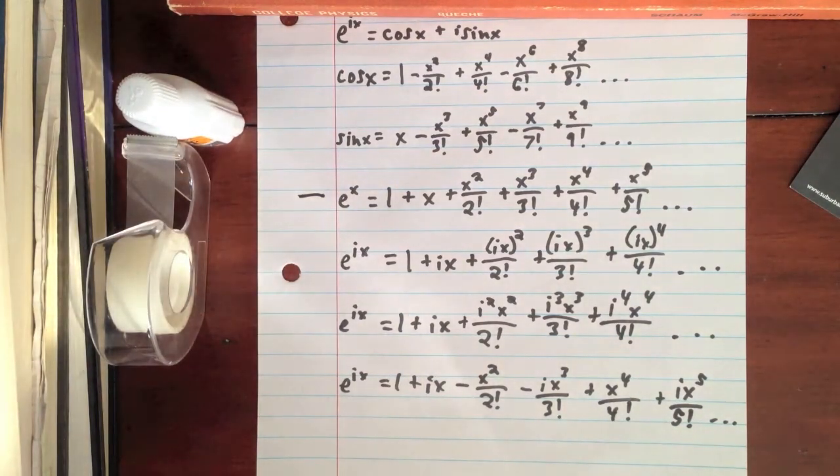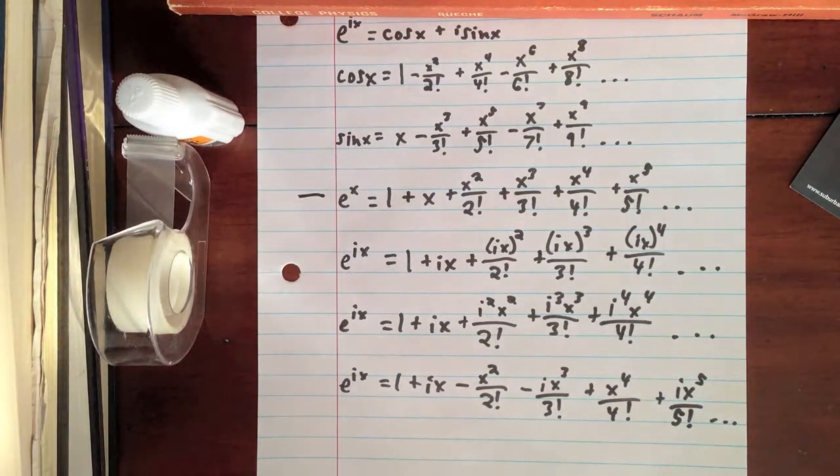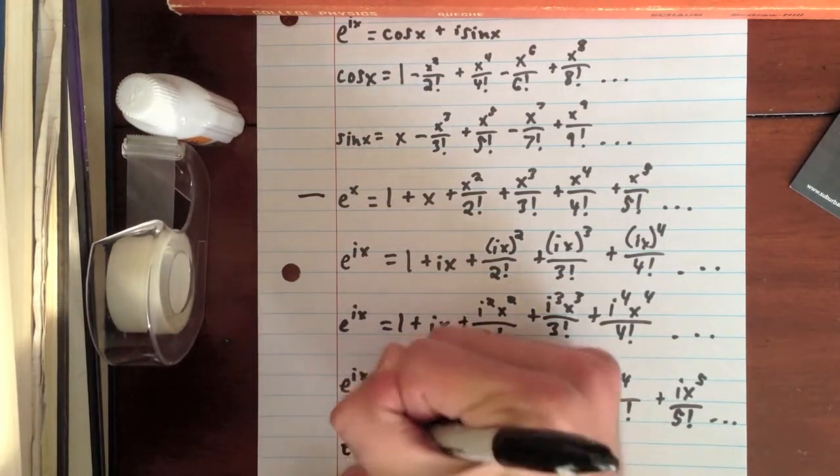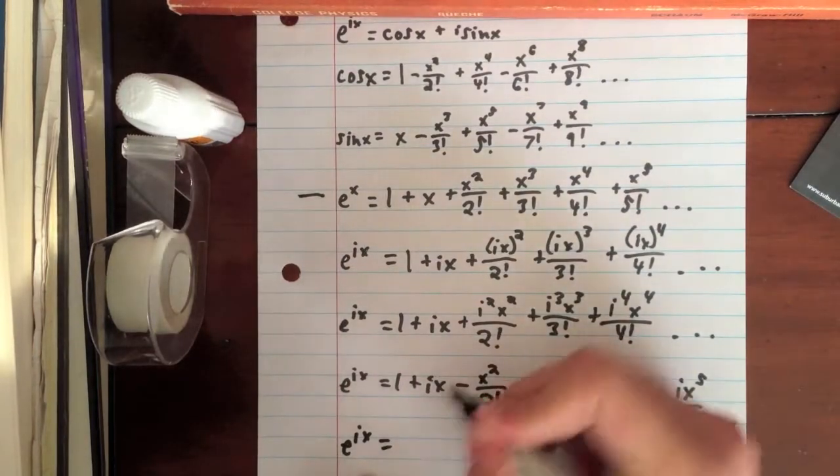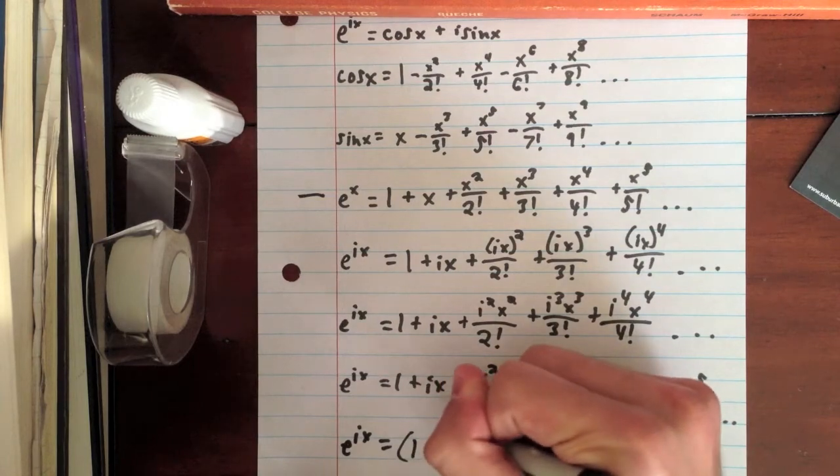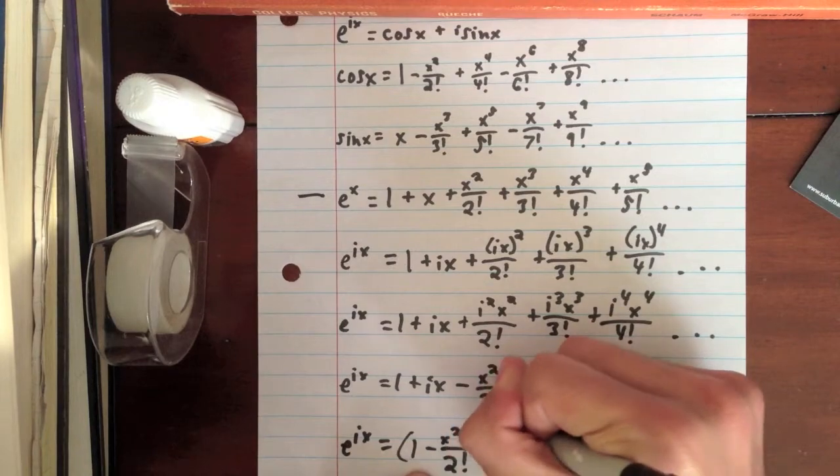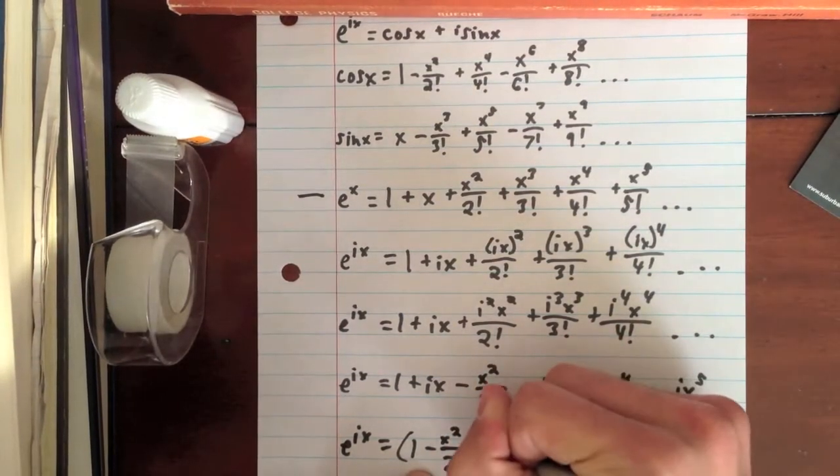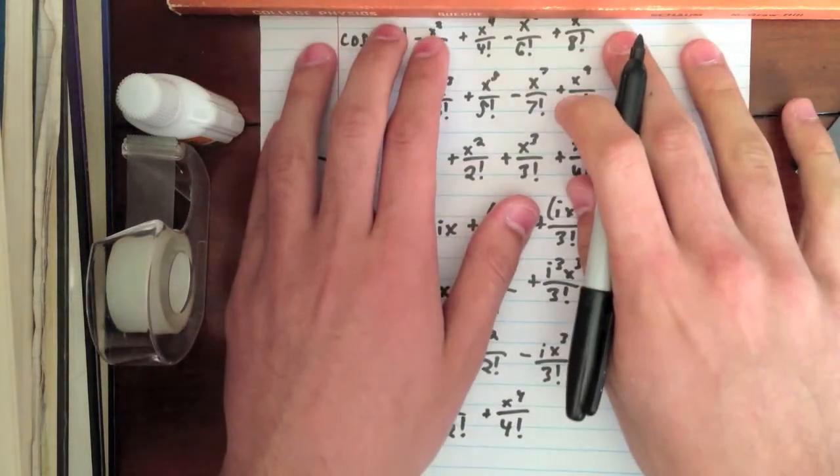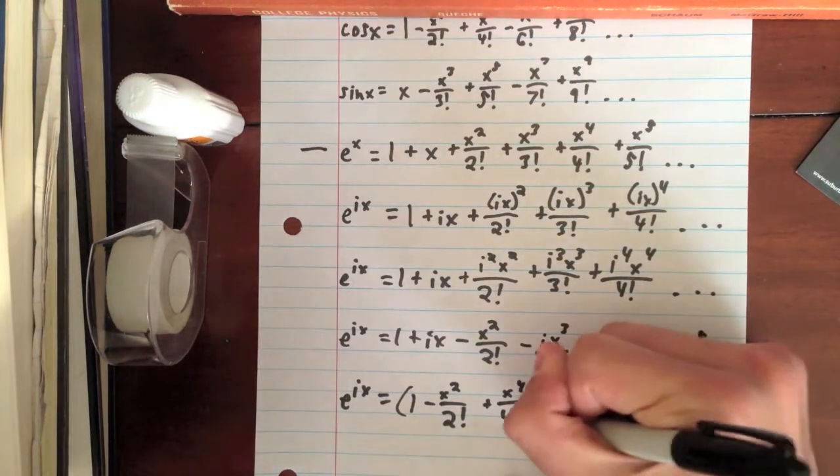So now, why don't we start to group based on terms with and without imaginary numbers. So, e to the ix is equal to, let's group the real numbers first. So, 1 minus x squared over 2 factorial plus x to the fourth over 4 factorial. Hoping that you can see this. Let me slide up a little bit. And that's all we have right here. And that just goes on forever.